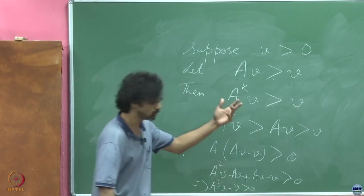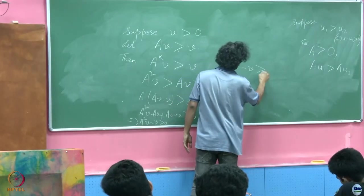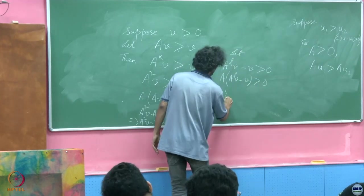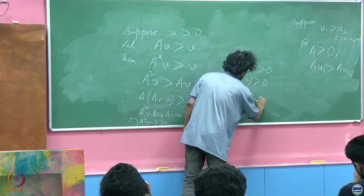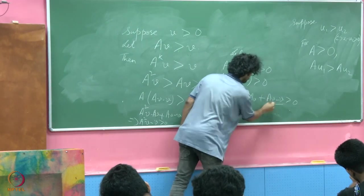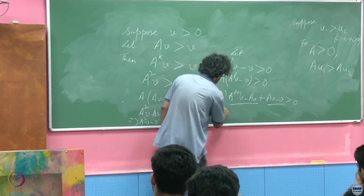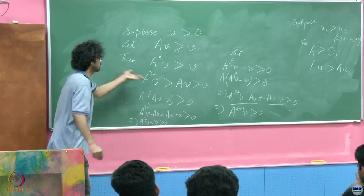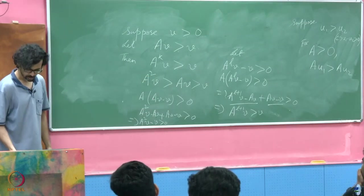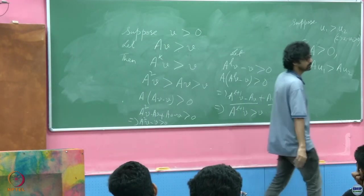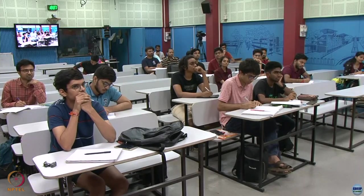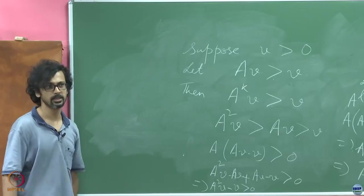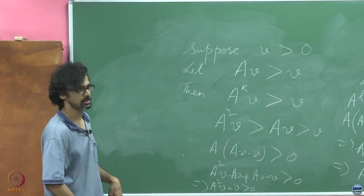This is the base step of an induction. Assume A^L V − V > 0; then hitting with A gives A^(L+1)V − AV > 0. Adding the positive vector AV − V gives A^(L+1)V − V > 0. So A^k V > V for all k. These properties show the analogy between operating on a positive vector with a positive matrix and operating on a positive number by multiplying with another positive number, with important consequences we shall see in the next module.